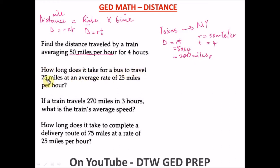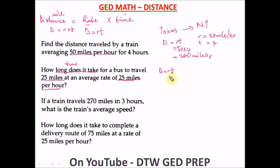Next question: how long does it take for a bus to travel 25 miles at an average rate of 25 miles per hour? The question is asking for time. Our rate is 25 miles per hour and our distance is 25 miles. From our formula D equals RT, to make T the subject we divide both sides by R, so R cancels out and we're left with T equals D over R.